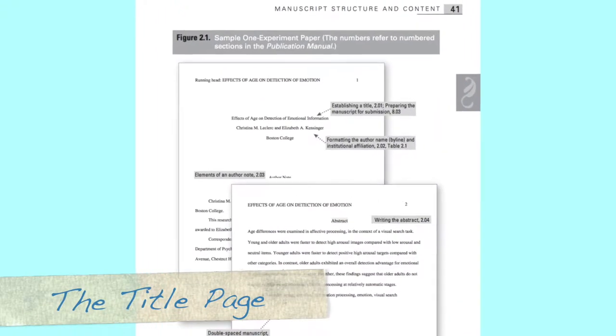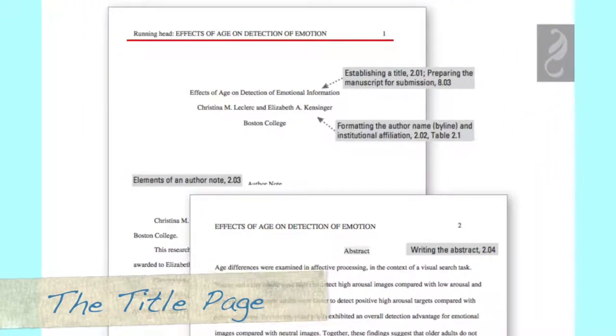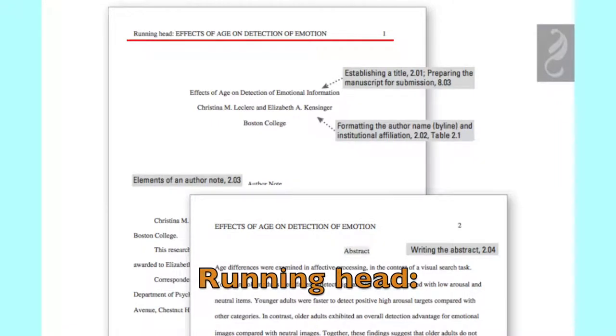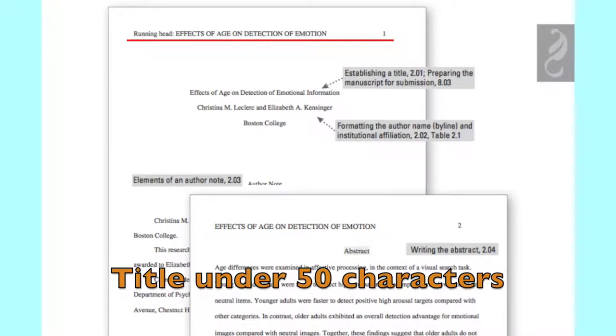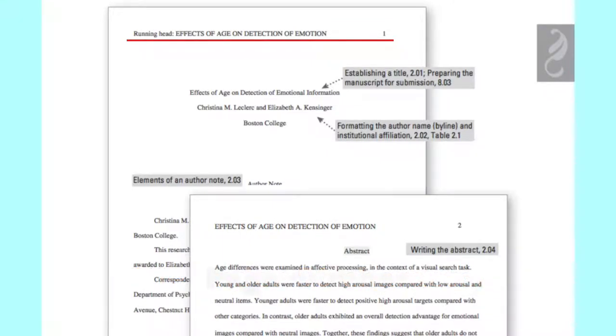Step one is formatting your running head. Make sure that R is capitalized on running and H is lowercase, and then the title of your paper is going to be in all caps. Make sure that the title is shortened. It should not exceed 50 characters in length. Last but not least, your page number should be flush with the right margin.